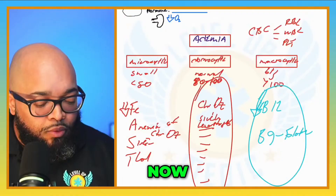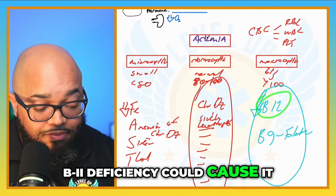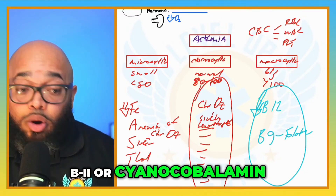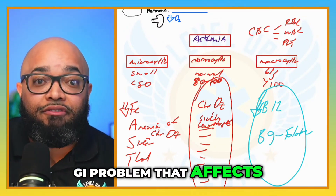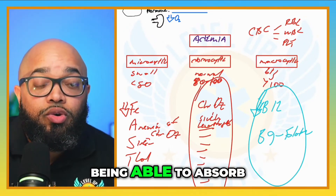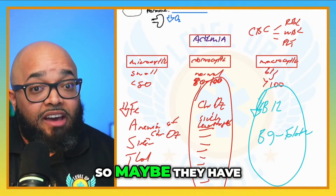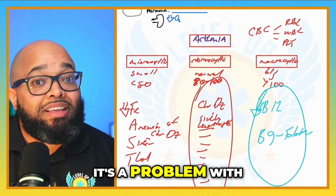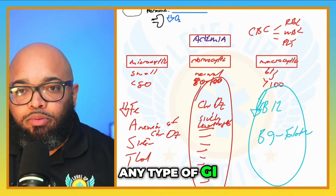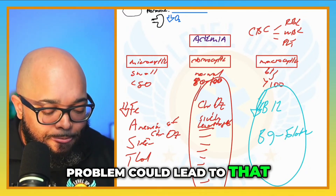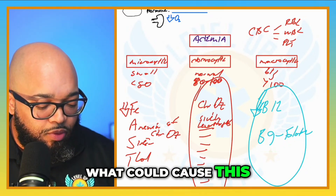For macrocytic anemia, a B12 deficiency — cyanocobalamin — could be caused by a GI problem affecting B12 absorption, or by pernicious anemia, which is a problem with intrinsic factor. Any type of GI problem could lead to B12 malabsorption. A B9 deficiency can also cause macrocytic anemia.